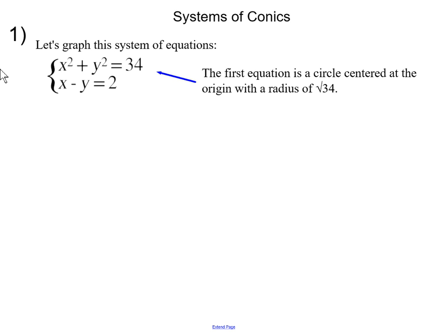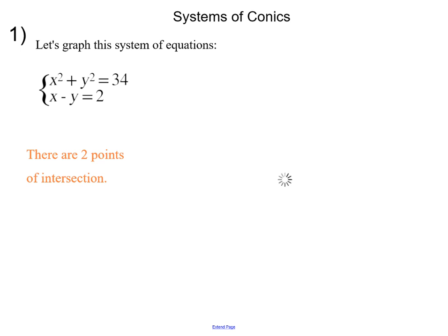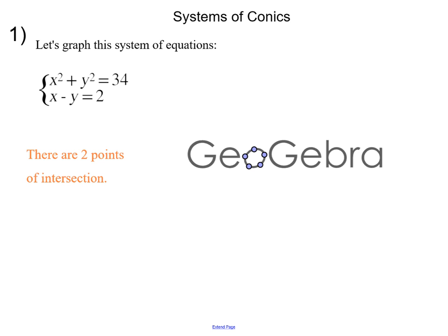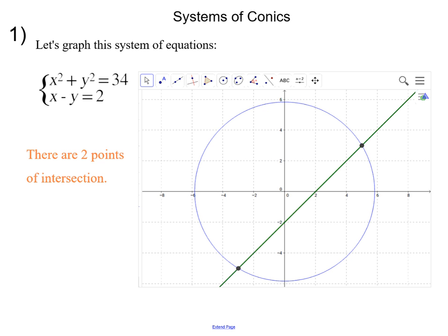The first equation is a circle centered at the origin with a radius of square root of 34. The second equation is a line with a slope of 1 and a y-intercept of negative 2. The first equation, x squared plus y squared equals 34, is shown in blue. The second equation, x minus y equals 2, is shown in green.